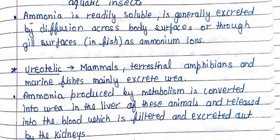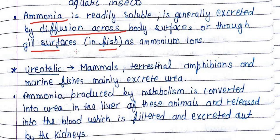Ammonia has very low solubility in blood, so it exits the body through diffusion across the body surface. Mainly if we talk about fish, it diffuses out through the gill surface, and this is how their elimination of ammonia takes place.